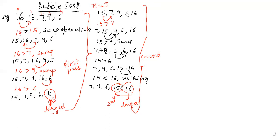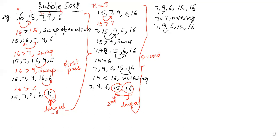By the end of my second pass, two elements have popped out to their required positions. The new dataset is now 7, 9, 6, 15, and 16. We need to repeat this process until all elements are sorted. We compare 7 and 9 — 7 is less than 9, so nothing happens. Then 9 is compared with 6 — 9 is greater than 6, so a swap occurs. The new dataset is 7, 6, 9, 15, and 16.